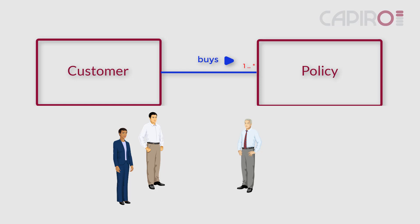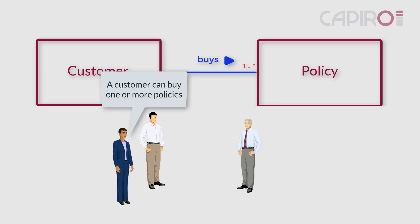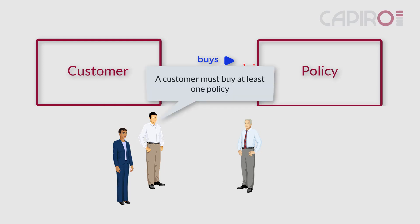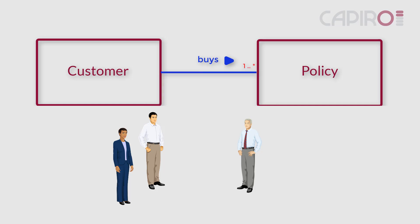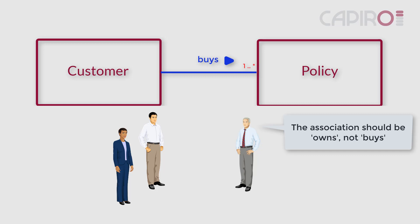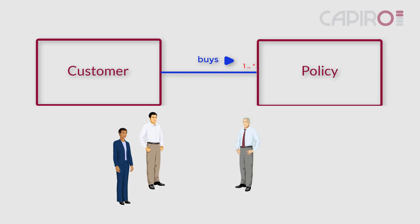We can read the model at this stage as either 'a customer can buy one or more policies,' or 'a customer must buy at least one policy.' Later that day, Theo tells the analysts that the business has decided that the association between customer and policy should be 'owns' rather than 'buys.' Whatever the business wants — it's their business and their model — so the analysts change the label of the association to 'owns.' Job done.